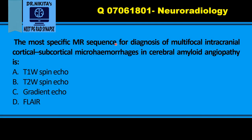The most specific MR sequence for diagnosis of multifocal, intracranial, cortical, subcortical microhemorrhages in cerebral amyloid angiopathy is? The answer is gradient echo. Remember that for any hemorrhage, the most specific sequence or the most useful sequence is gradient echo.